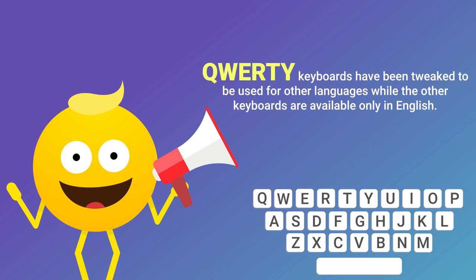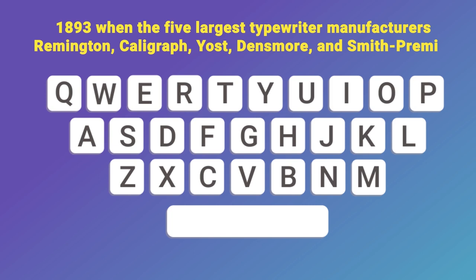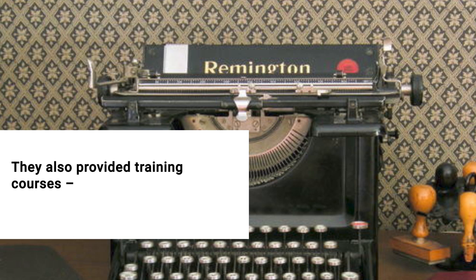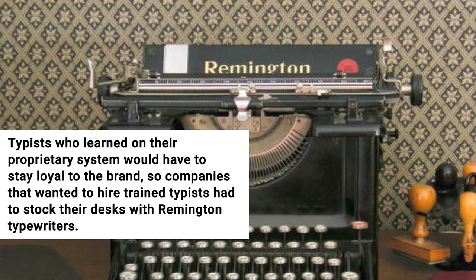The fate of the keyboard was decided in 1893, when the five largest typewriter manufacturers — Remington, Calligraph, Yoast, Densmore and Smith Premier — merged to form the Union Typewriter Company, and agreed to adopt QWERTY as the de facto standard that we know and love today. Remington didn't just produce typewriters; they also provided training, for a small fee of course. Typists who learned on their proprietary system would have to stay loyal to the brand, so companies that wanted to hire trained typists had to stock their desks with Remington typewriters.